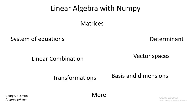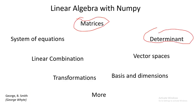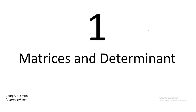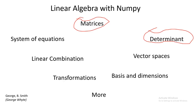This course is going to be structured in different series. In the first series we are going to be considering matrices and determinants. Once we are done with that first series we'll move to the second series, where I think we'll look at system of equations — but we'll confirm which topics go in the second series when we get there. So that's the intro to this course.